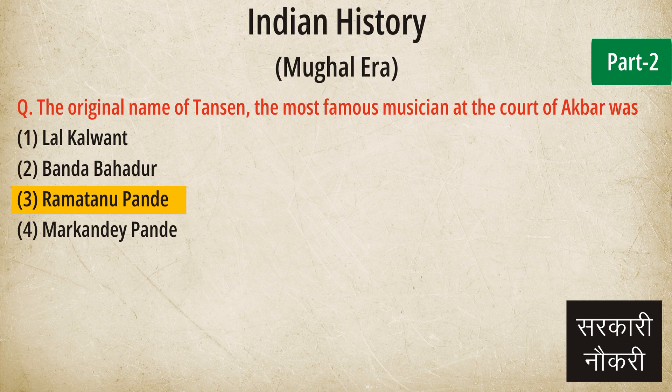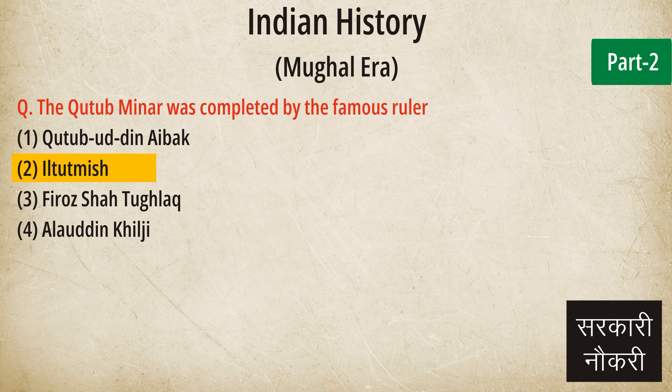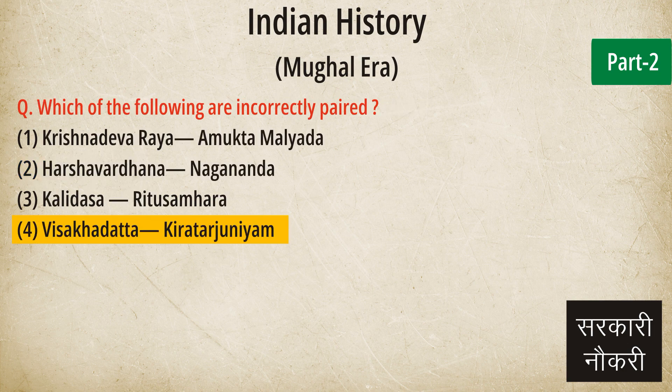Question: The original name of Tansen, the most famous musician at the court of Akbar was. Answer: Ramtanu Pandey. Question: The Qutub Minar was completed by the famous ruler. Answer: Il-Tutmish. Question: Which of the following are incorrectly paired? Answer: Vishakadatta, Kiratarjuniyam.